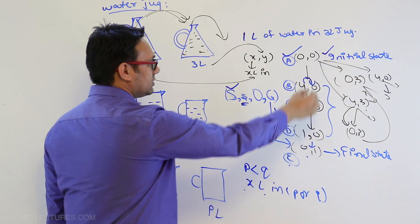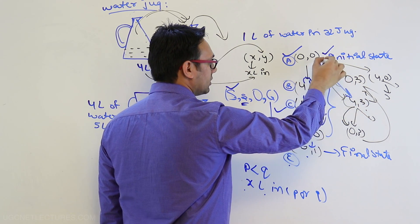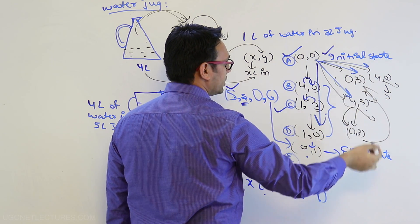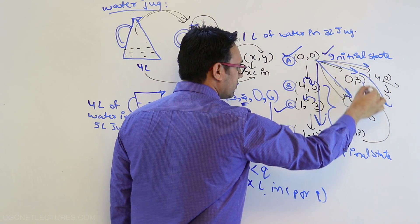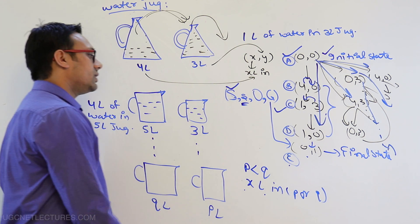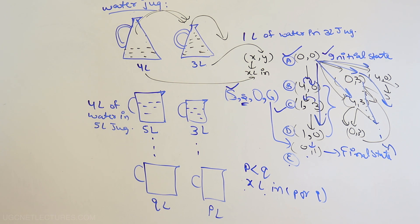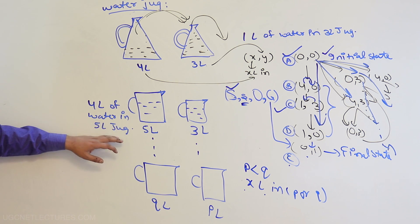You can see there are more than one path possible through the state space — many different nodes and many different paths are achievable. The operators are: fill the jug, pour water into another jug, and pour water out of the jug. Now let's look at the second problem: can you fill four liters of water in the five liter jug?